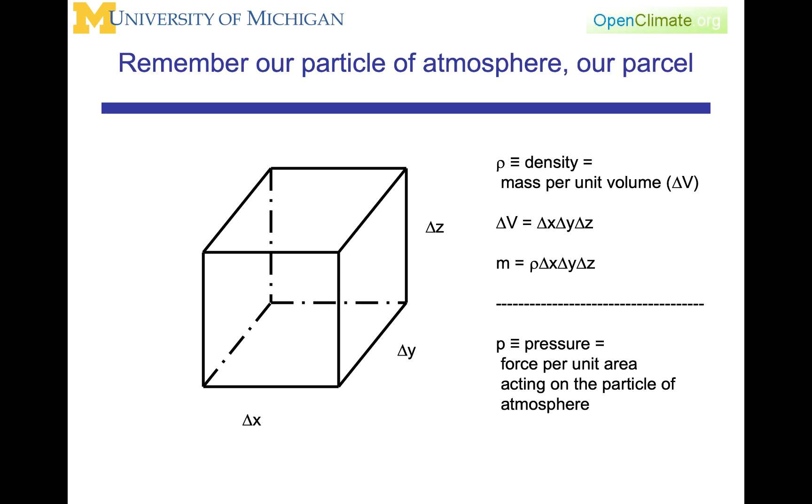We're going to rely once again upon our idealized parcel which we can think of as a little particle of atmosphere. Its density is mass per unit volume. The volume of our parcel, which will be considered in a rectangular geometry, is delta x, delta y, delta z. And for the mass continuity equation, we're going to be paying a lot of attention to the area of the interfaces of the volume. For example, the interface on the right would have an area of delta y times delta z.